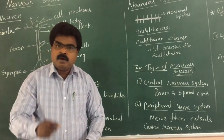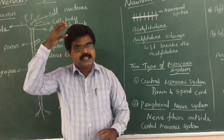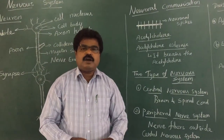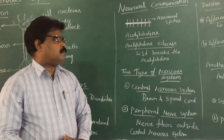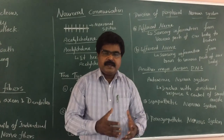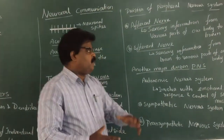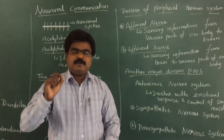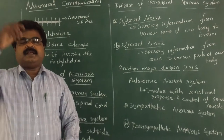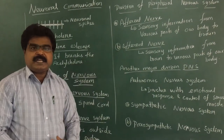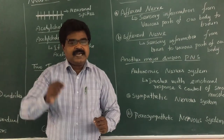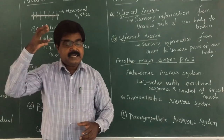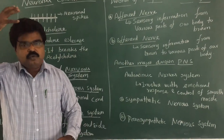There are two major classifications of the nervous system: the Central Nervous System, consisting of the brain and spinal cord, and the Peripheral Nervous System, which includes nerve fibers outside the CNS. The major divisions of the Peripheral Nervous System are afferent nerves, which carry sensory information from various parts of the body to the brain, and efferent nerves, which carry information from the brain to various parts of the body.